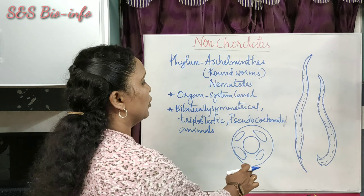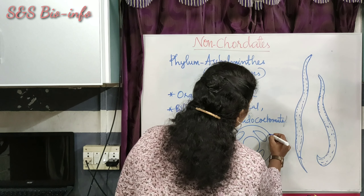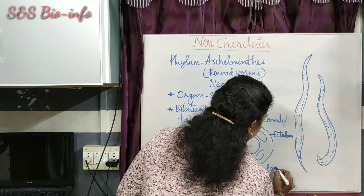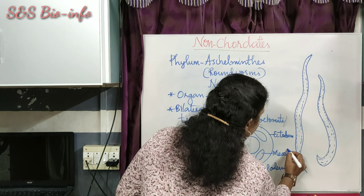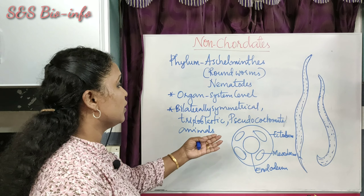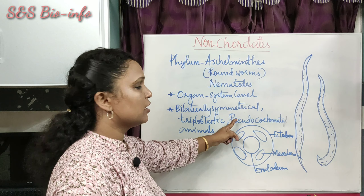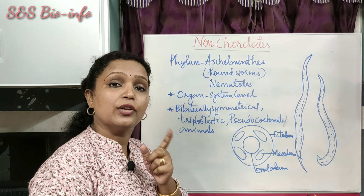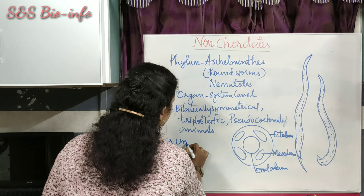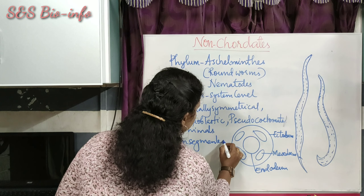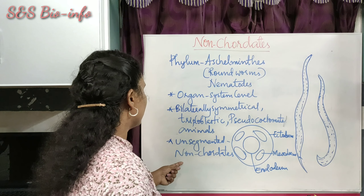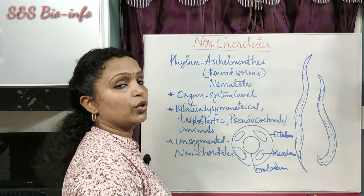Pseudocoelomate means the mesoderm appears as pouches between the ectoderm and endoderm — this condition is called pseudocoelom, and these animals are pseudocoelomate animals. They also have an unsegmented body and are non-chordates, because they do not have a notochord in their body.